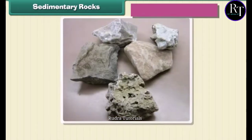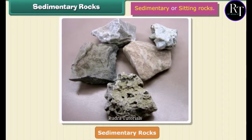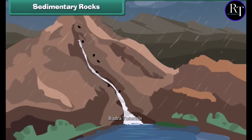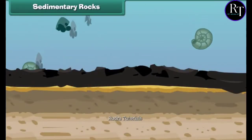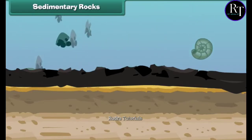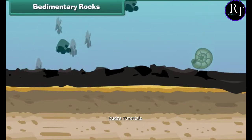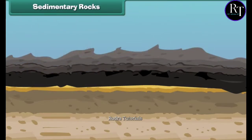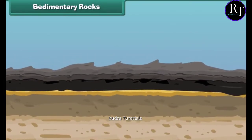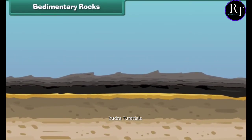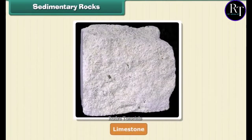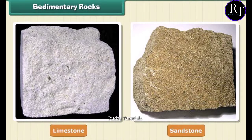The second type of rock is sedimentary rock. These are also called sitting rocks. Rocks roll down, crack, and hit each other, then they are broken down into small particles. These smaller particles are called sediments. The sediments are transported and deposited by wind, water, etc. These loose sediments are compressed and hardened to form layers of rocks. These types of rocks are called sedimentary rocks. Limestone and sandstone are examples of sedimentary rock.